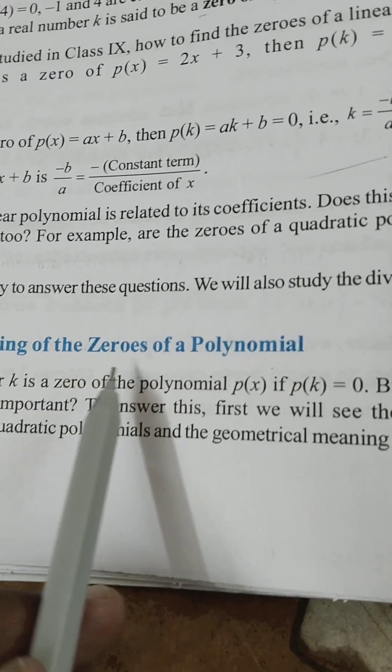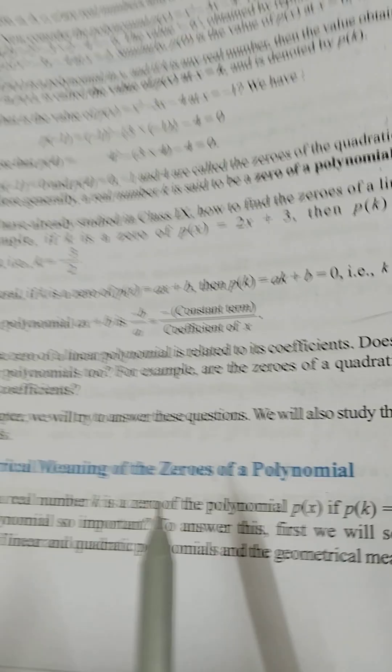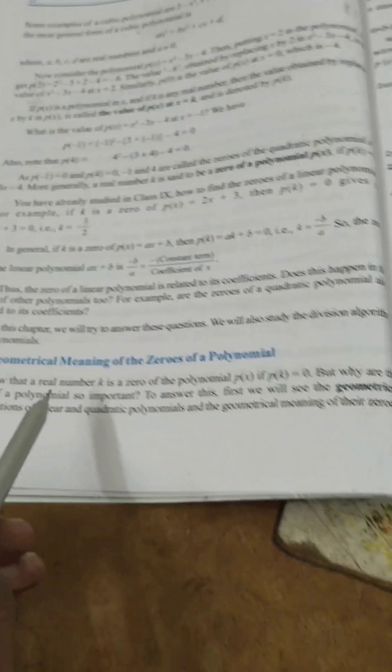Now let's look at the geometrical meaning of the zero of the polynomial. This is explained in your textbook.